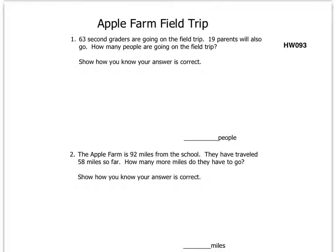Here we are on side 2 of our homework, and we have the Apple Farm field trip. Number 1: 63 second graders are going on the field trip, 19 parents will also go. How many people are going on the field trip? So based on this information here, you're going to have to answer the question, how many people are going on the field trip here, and then show how you know your answer is correct. So you're going to have to show your proof.